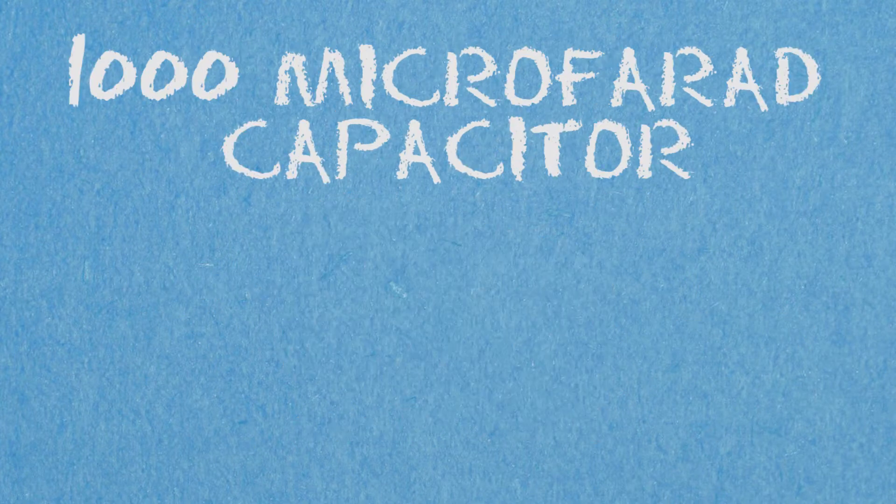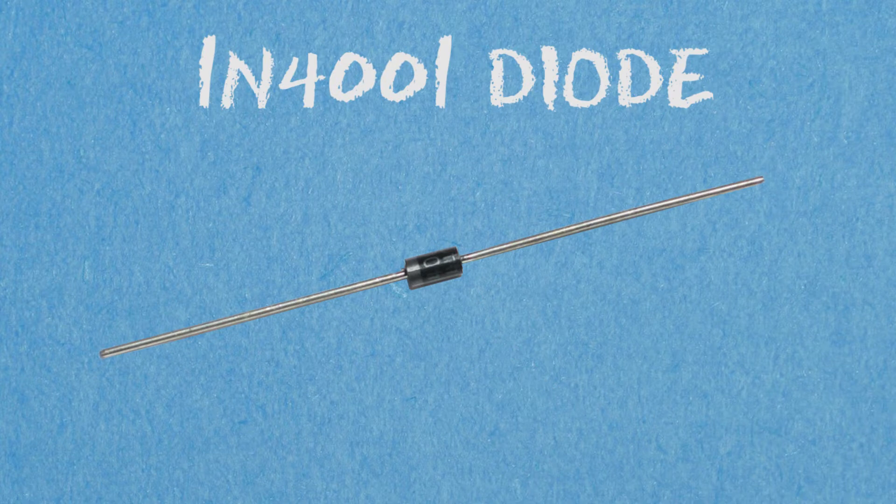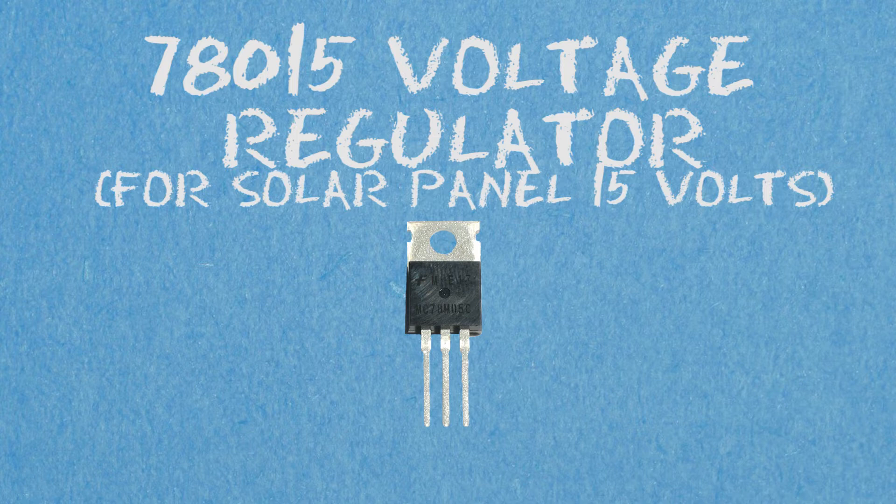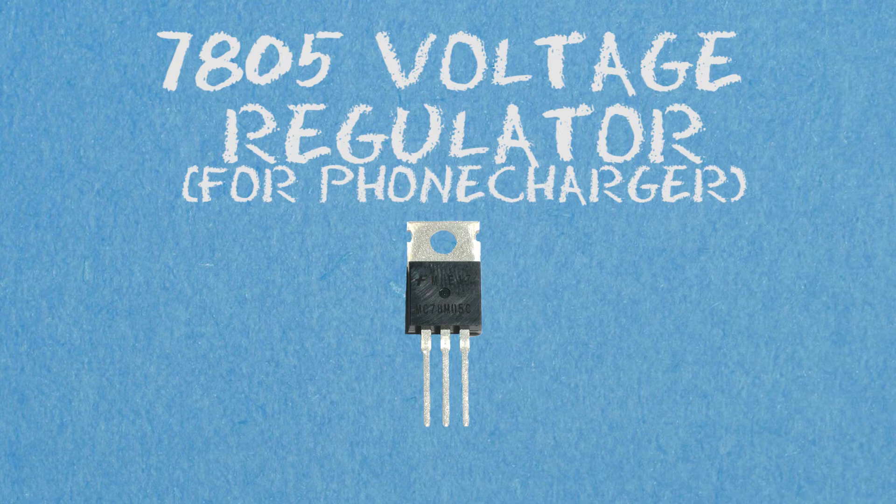Materials needed: the PCB, 1000 microfarad capacitor, 1N4001 diodes, 78015 regulator for the solar panel at 15 volts, and 7805 voltage regulator for the phone charger.